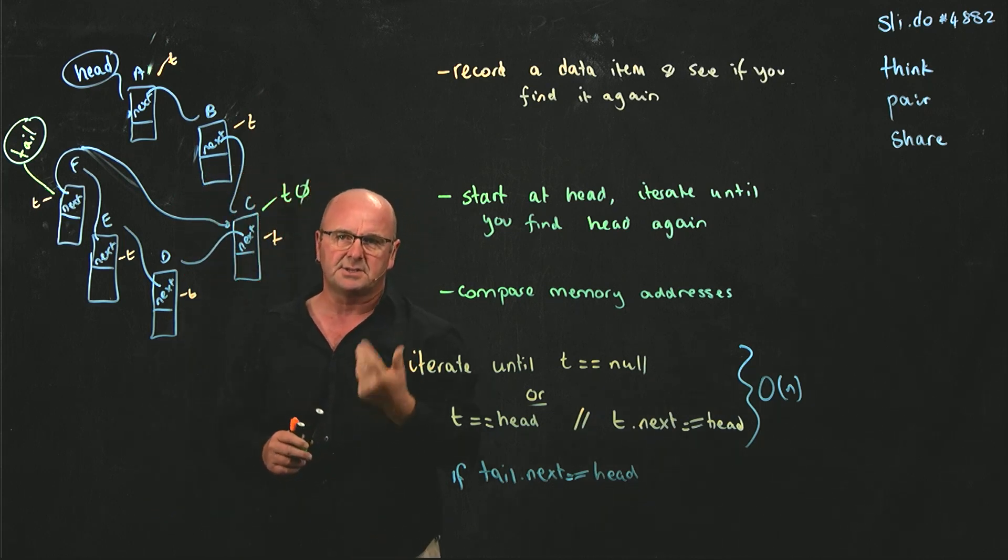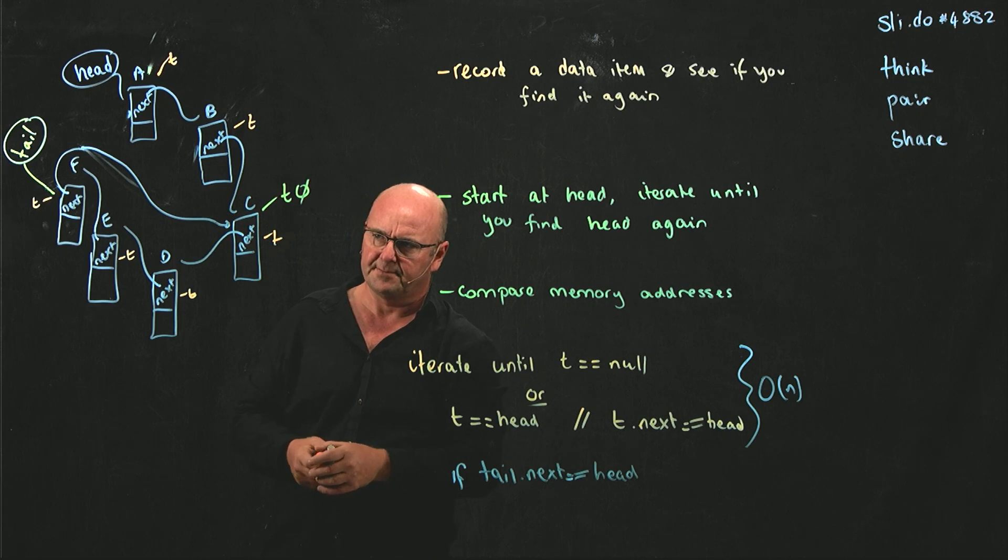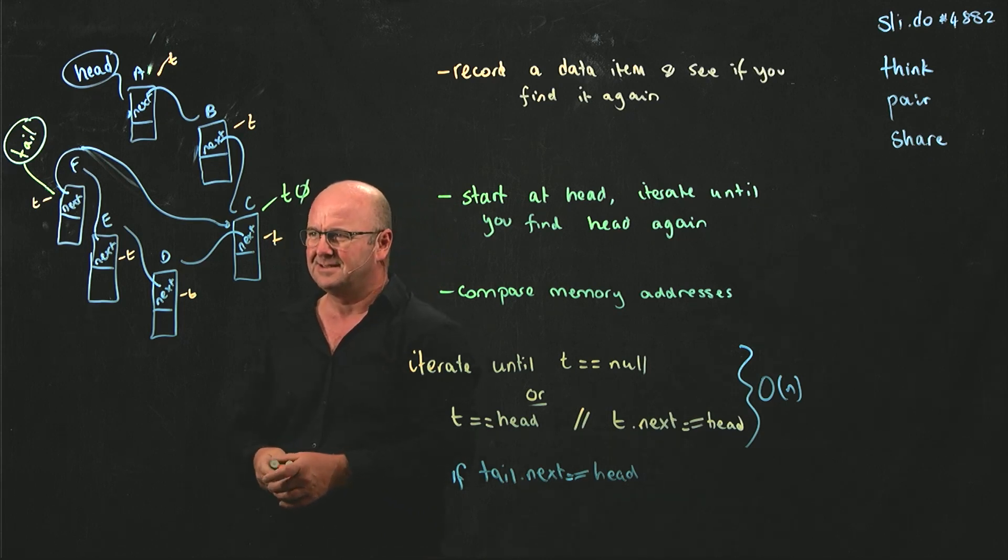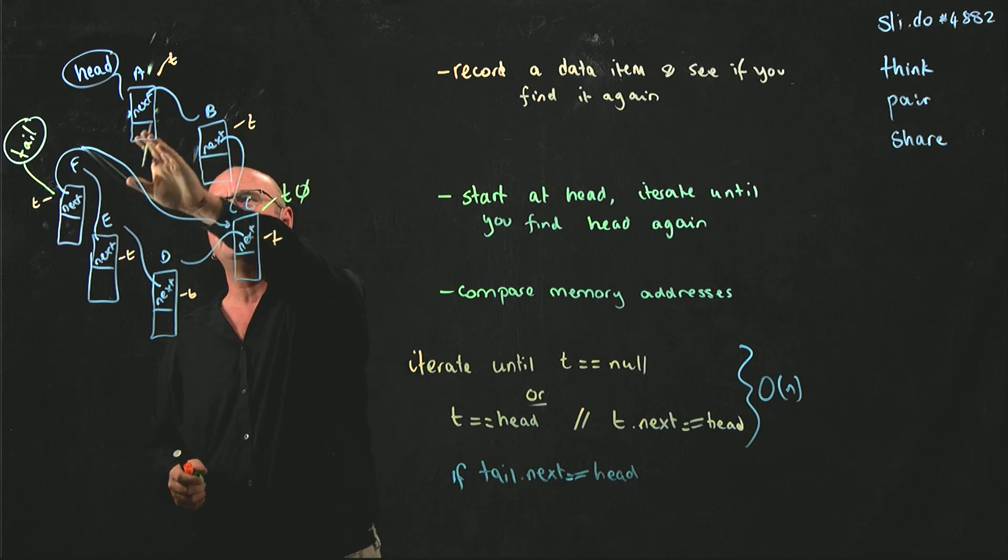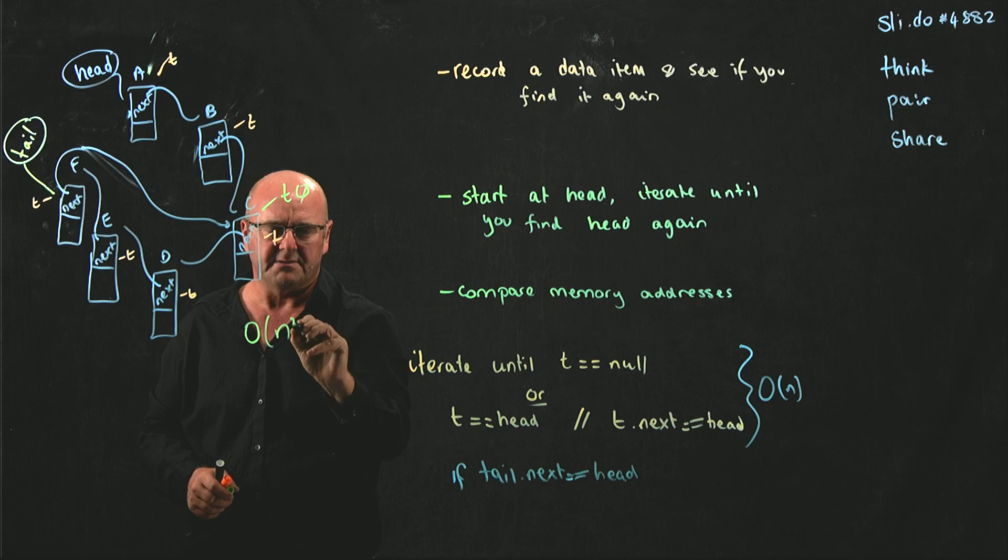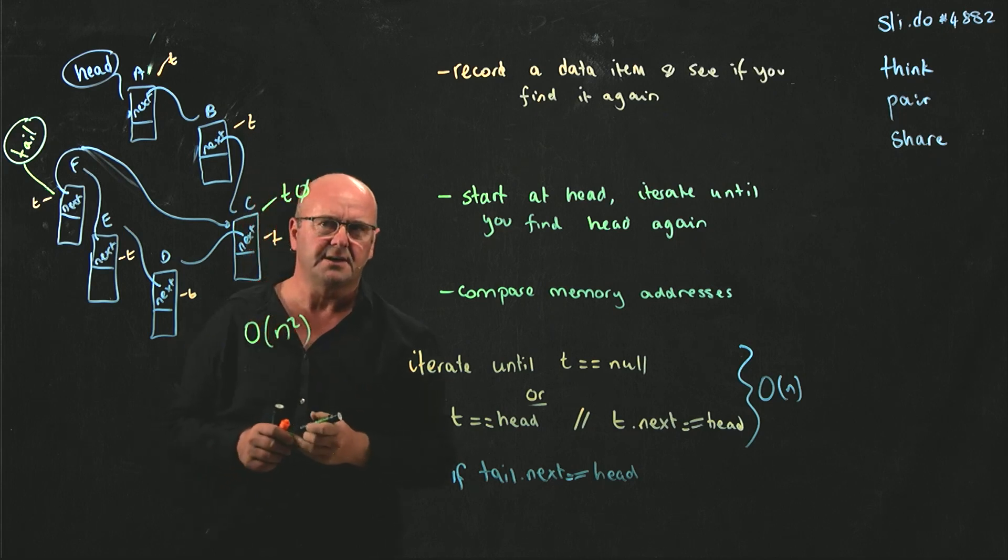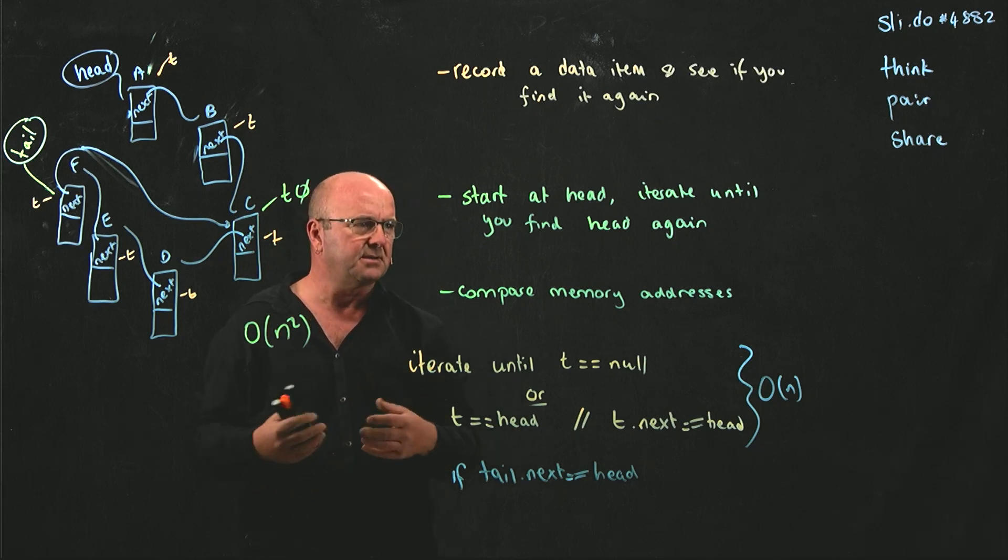So in that case, you need two temporary pointers, and what's the complexity of that? What's the complexity of that comparison? If you use two tail pointers and you keep going around, and for every node you go through n times, and the next node you go through n times, and the next node you go through n times, that complexity would be big O of n squared. Right? Because for every node you have to do n comparisons. So it's n times n, n-squared comparisons.